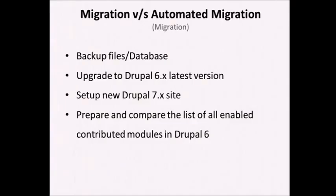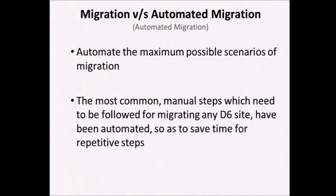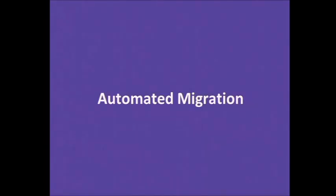We have to upgrade to the latest D6 version, set up a new D7 site, compare the list of all modules available in D6 and check which contributed modules are available in D7. This needs to be done so that we have exactly the same functionality in D7 as in D6. What automated migration will achieve is a script that automates the maximum possible scenarios. We're not saying the script magically creates a perfect D7 site — we're automating the manual steps that can be automated to make migration more streamlined.